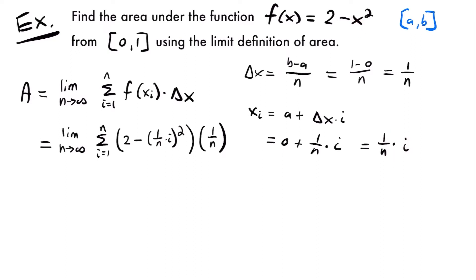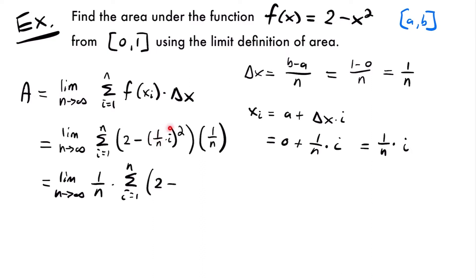Simplifying, we have the limit as n approaches infinity. We move 1/n to the outside of the sum, since only terms involving i matter inside the sum. So we'll have 1/n times the sum from i = 1 to n of 2 minus 1/n² times i². All we did was square each part of the quantity.